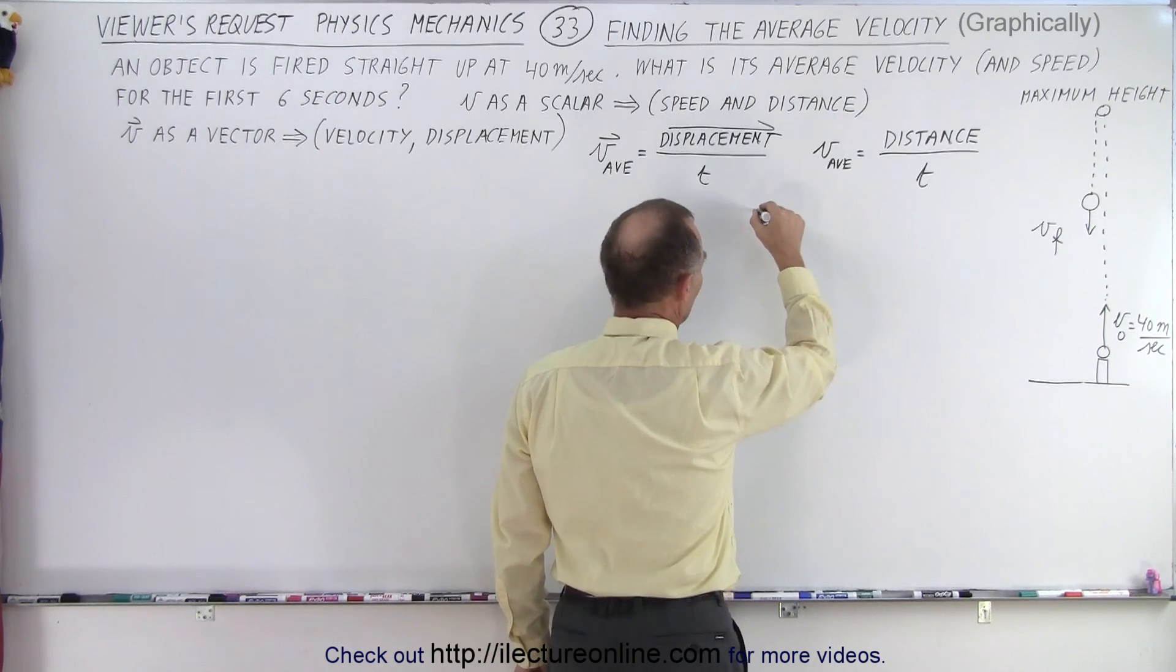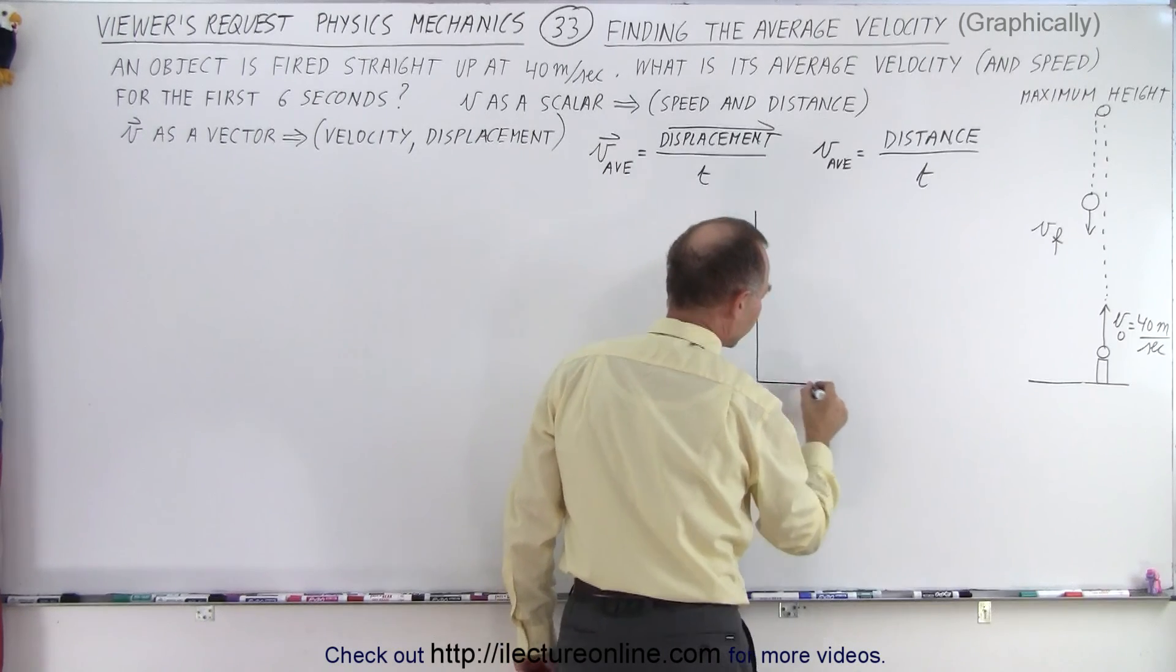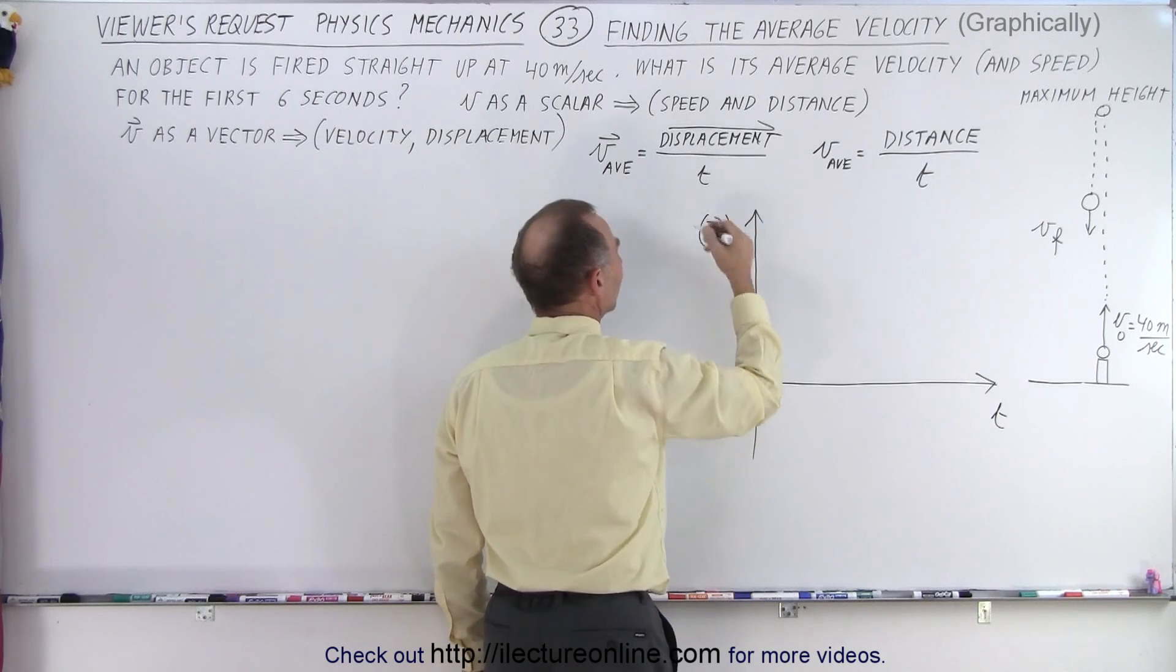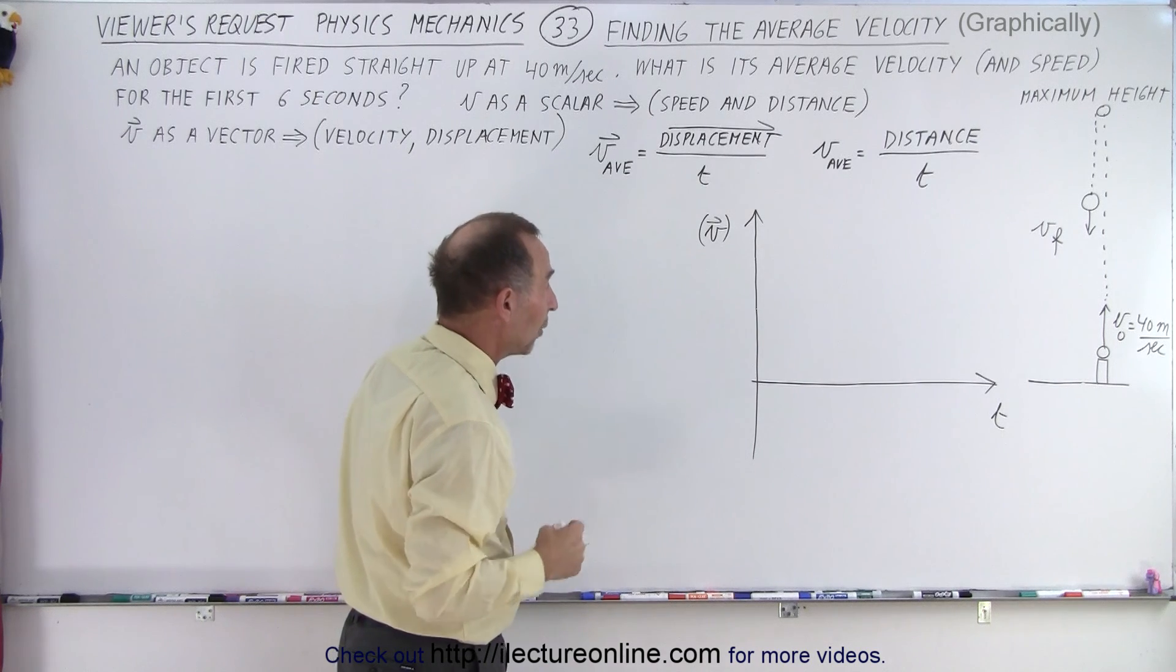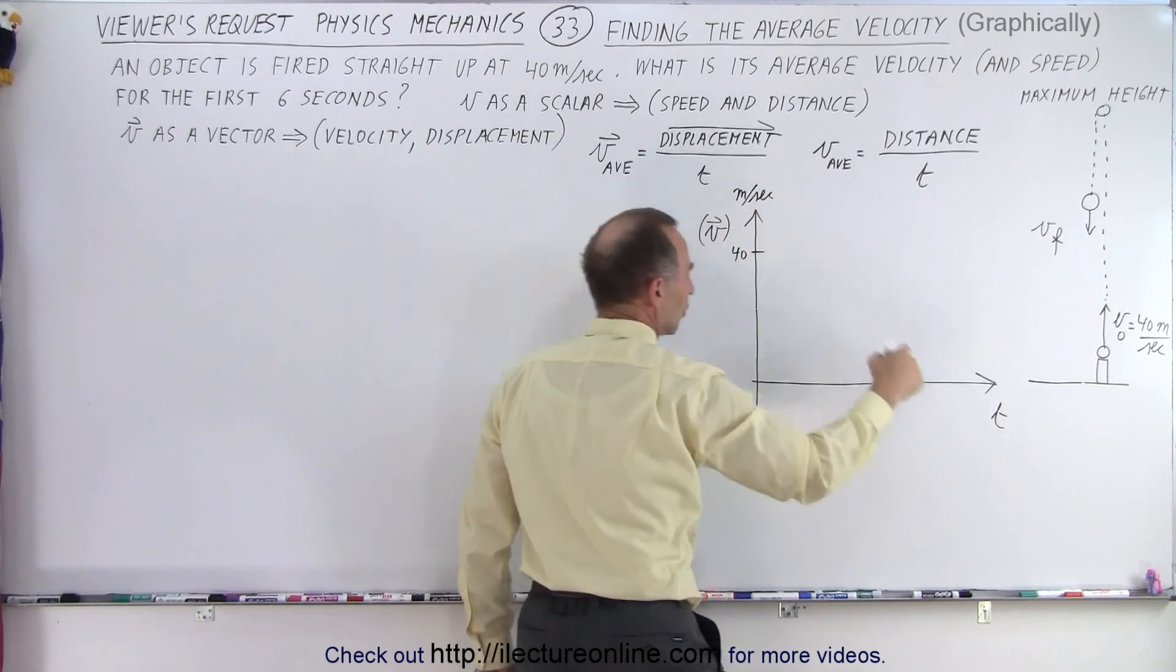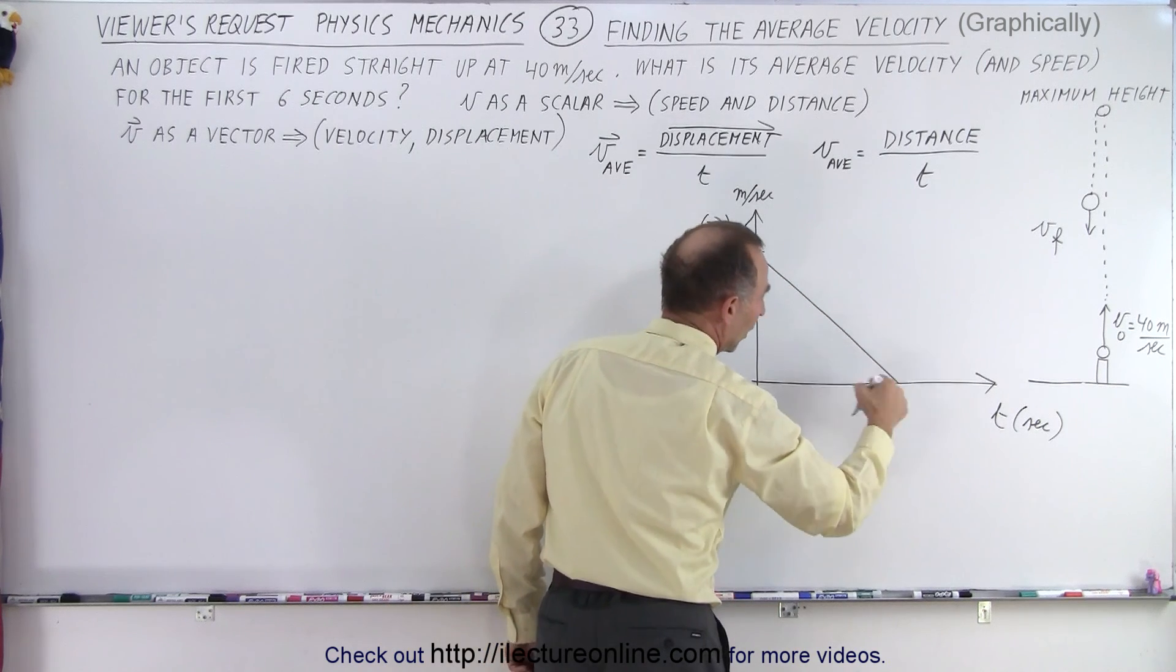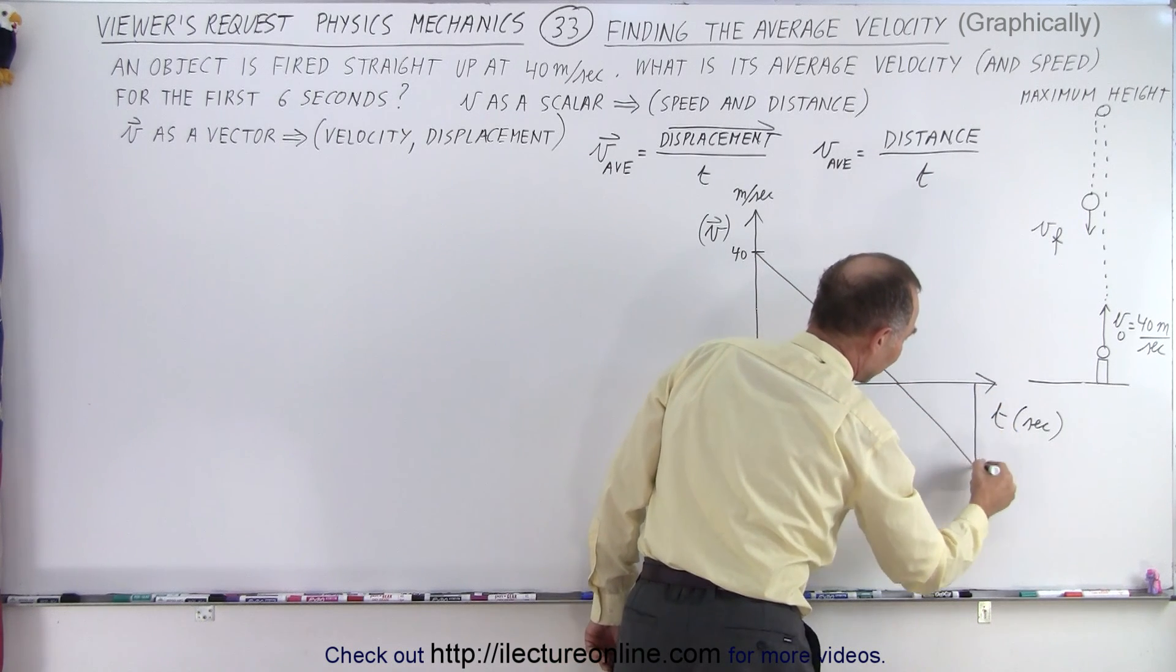We're going to do it graphically and draw a velocity versus time graph. So here's the velocity, and here's the time. We can think of it as a vector quantity or a scalar quantity. We start out at an initial velocity of 40 meters per second. The speed is going to decrease until we reach zero after a certain amount of time, and then as it goes back down, it now has negative velocity.